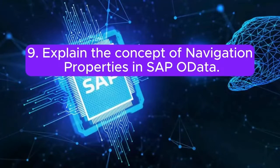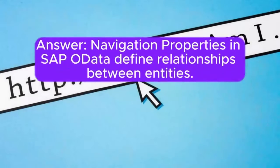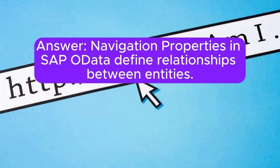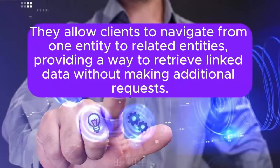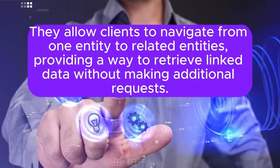Question 9: Explain the concept of navigation properties in SAP OData. Navigation properties in SAP OData define relationships between entities. They allow clients to navigate from one entity to related entities, providing a way to retrieve linked data without making additional requests.